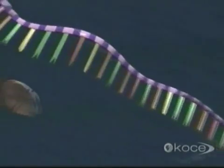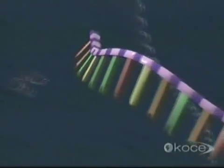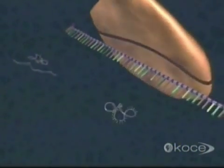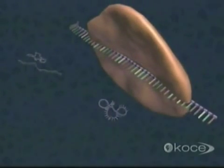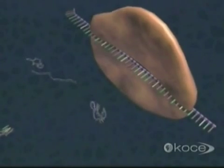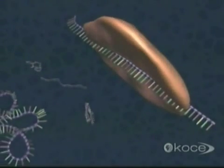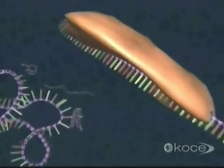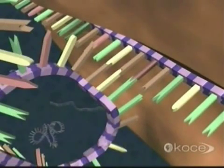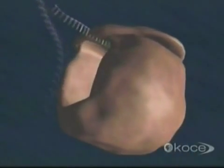Translation begins with the binding of a messenger RNA to a small subunit of a ribosome, the cell's workbench for protein assembly. When properly positioned, the messenger RNA triggers the approach of a tRNA, which carries the first amino acid. The tRNA attaches only if its three nucleotides exactly match the first three coding nucleotides of the mRNA strand. A large ribosomal subunit then joins the group to form a functional ribosome, with two binding sites built from ribosomal proteins and rRNA.